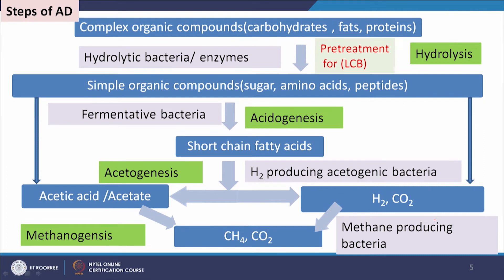Now we look at the mechanism and chemistry behind biogas production. There are four major steps: hydrolysis, acidogenesis, acetogenesis, and methanogenesis — all applicable to sludge management through anaerobic digestion. In the previous class we also discussed that thermal hydrolysis followed by anaerobic digestion gives more biogas production.